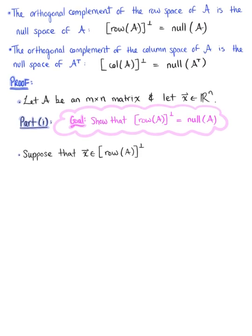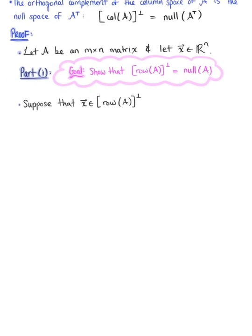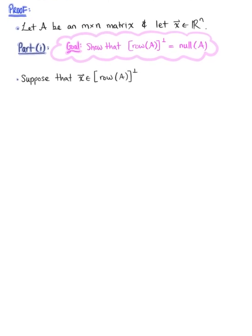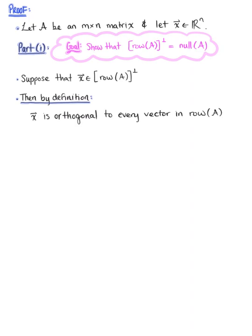Let's suppose that vector X is in the orthogonal complement of the row space of matrix A. Then, by definition, we know that vector X is orthogonal to every vector in the row space of matrix A. This statement is true if and only if matrix A times vector X is equal to the zero vector, which implies that vector X must be in the null space of matrix A.